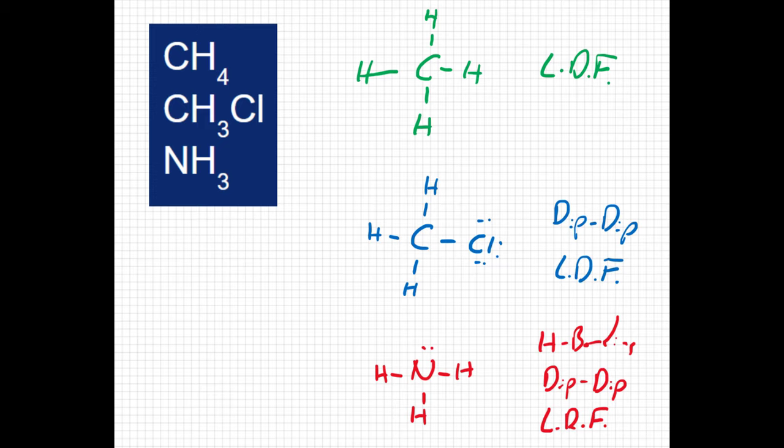As we look at the intermolecular forces here, we can see the methane, the CH4, is going to have the weakest intermolecular forces. The chloromethane will be somewhere in the middle. And the ammonia, the NH3, is going to have the strongest intermolecular forces because it experiences all three.